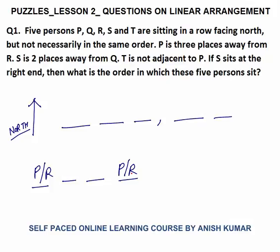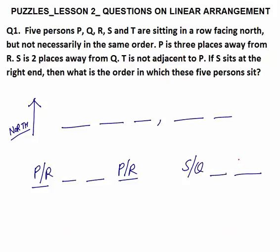S is two places away from Q. It means S and Q — this is one place away, this is two places away — there is a gap of one person between S and Q. I am writing slash because I don't know whether S is on the left side or Q is on the left side. T is not adjacent to P; symbolic notation: T and P are not together.